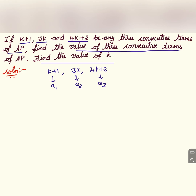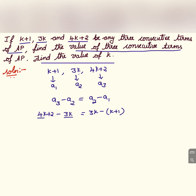I have taken k plus 1 as a1, 3k as a2, and 4k plus 2 as a3. Since they are terms of an AP, we can write a3 minus a2 equals a2 minus a1, because the common difference is the same. So 4k plus 2 minus 3k equals 3k minus (k plus 1), giving us k plus 2 equals 2k minus 1.